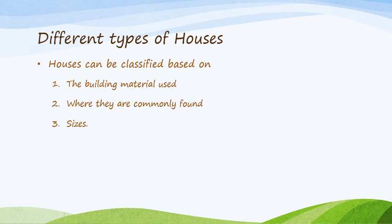Now, children, our next topic is different types of houses. Houses can be classified based on the building material used — stone, wood, bricks, mud, etc. — like the pictures I have shared with you. Also, where they are commonly found depends on what material is available in that particular place; for example, wooden houses are easily found in forests. The size can be single storey, double storey, or multi storey.